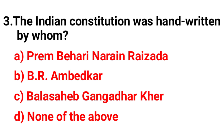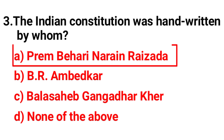Question number 3. The Indian constitution was handwritten by whom? Option A: Prem Bihari Narayan Raizada. Option B: B.R. Ambedkar. Option C: Balasaheb Gangadhar Kher. Option D: None of the above. The correct answer is Option A, Prem Bihari Narayan Raizada.